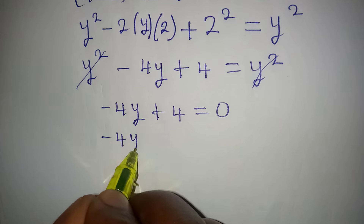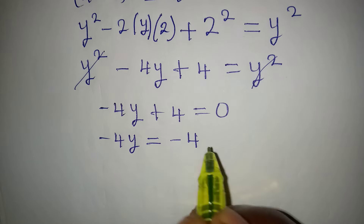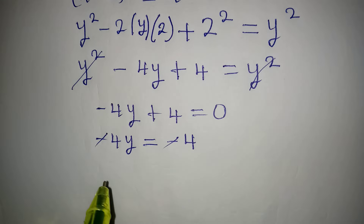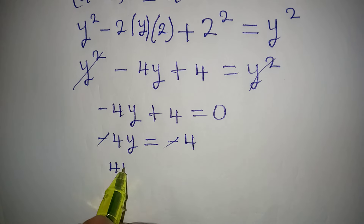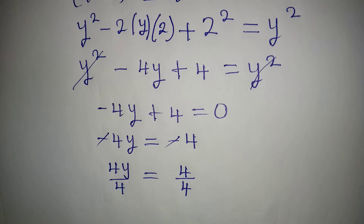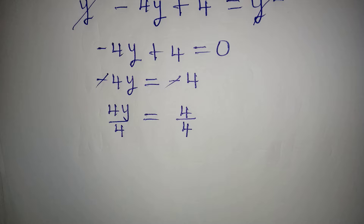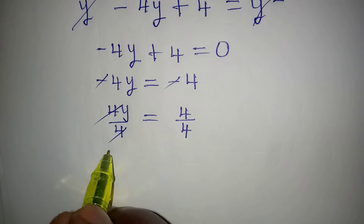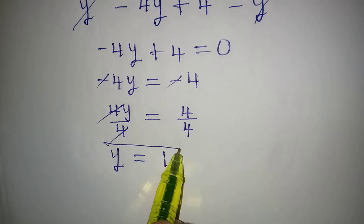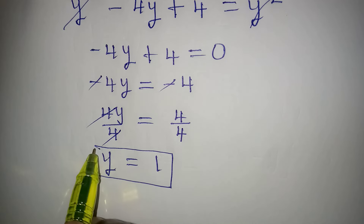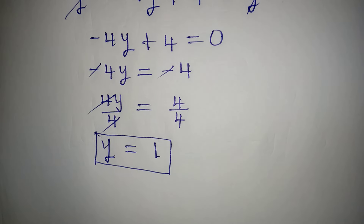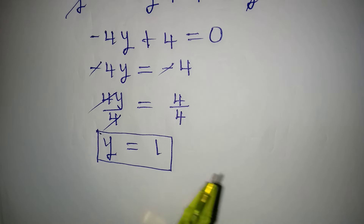From here, minus 4y equals minus 4 after collecting like terms. The negatives cancel, then 4y divided by 4, and 4 divided by 4 — dividing both sides by the coefficient of y — gives us y equal to 1. Using the first method, which involves expansion, we got y equal to 1.